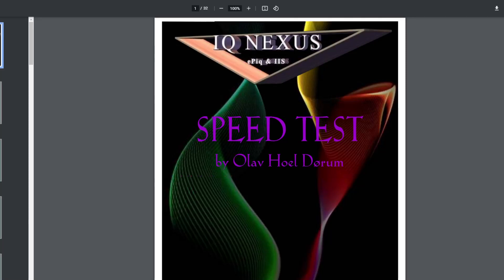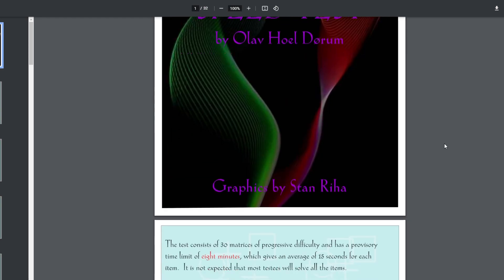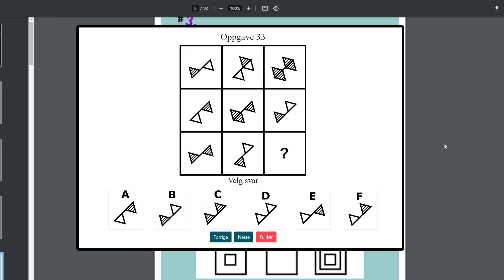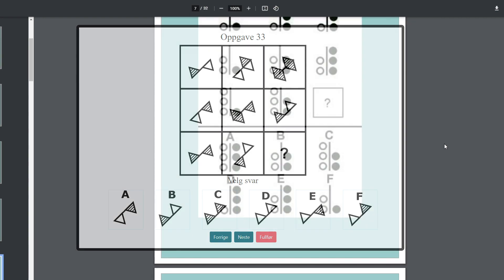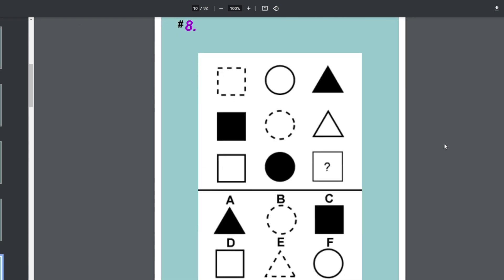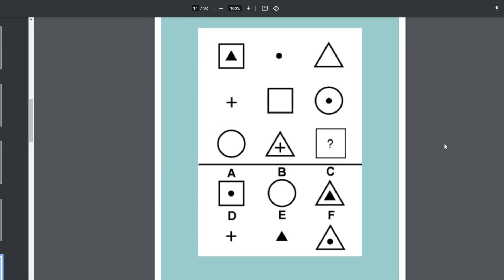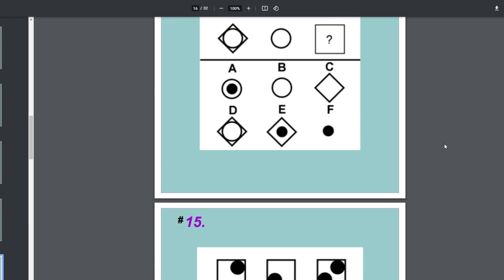Hi, for today's video, I will do something a bit different. I will go through the IQ Nexus speed test by Olav Dørum, which is the same guy that made the Mensa Norway IQ test. However, I didn't solve the puzzles before recording me going through them, so I will go through them live with a time limit of 8 minutes to solve them.